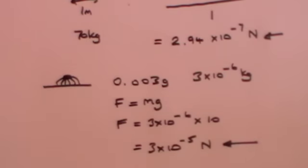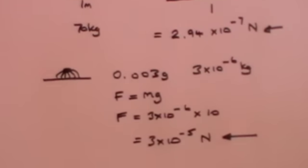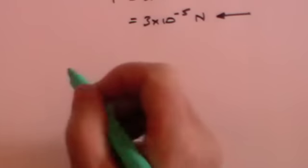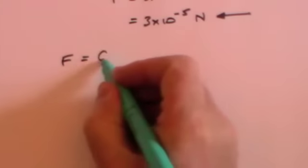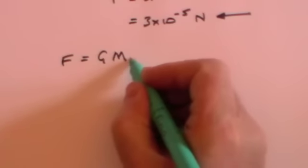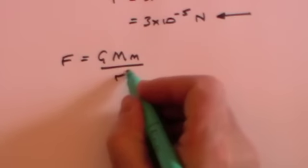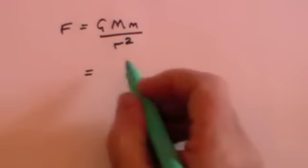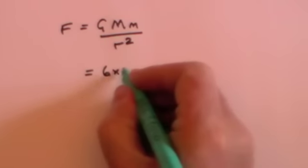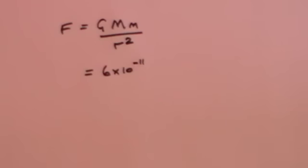So if gravity is that weak, how can gravity keep the Sun and the Earth in orbit? Well, the answer is because they are massive. So let's do exactly the same formula again: F is equal to G times one mass times the other mass divided by r squared, but this time for the Sun and the Earth. G is a constant — that doesn't change, that's still this very small number, 6 times 10 to the minus 11.